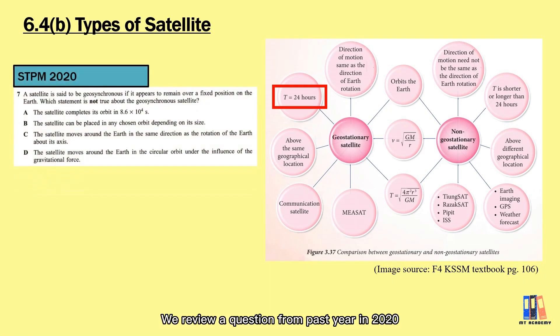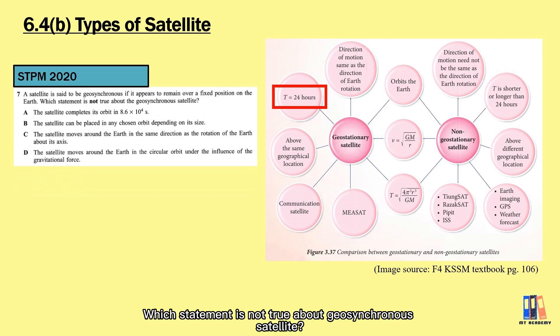We review a question from a past year in 2020. Which statement is not true about the geosynchronous satellite? Answer C and D are true. Answer A may not be accurate since it rounded off the value if you convert the 24 hours to a second. But let's check on the answer B. It says that the satellite can be placed in any chosen orbit depending on its size.